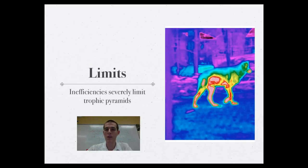I just wanted to focus in on this picture here real quick. It shows a wolf on a thermal imaging camera, and you can see all the red areas or the hot areas. That just represents that if you've got 100 joules of energy at one pyramid level, only 10 joules might actually be stored as biomass that can be transferred to the next level because so much energy is lost to heat and other metabolic processes.